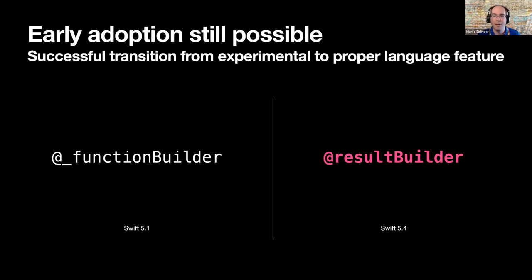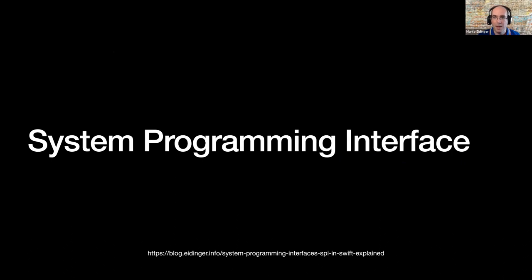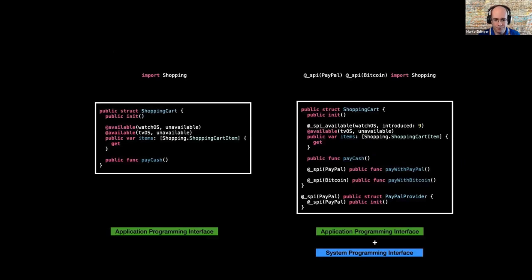Now I'd like to talk about system programming interfaces, which is also covered in a blog post of mine. First, an API definition: APIs are normally entities in a library that clients may use — in Swift, all declarations marked with public or open access level. People who import your shopping module have access to the ShoppingCart struct, can initialize it, and call the payCash function.